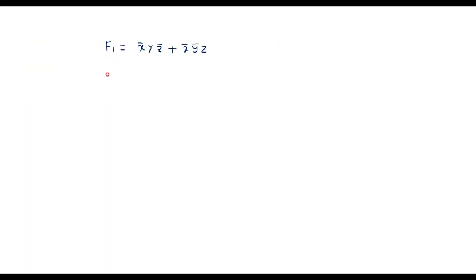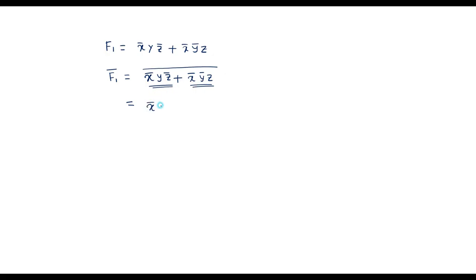Take complement on both sides. So f1 bar is equal to the complement of (x̄yz̄ plus x̄ȳz). Now applying De Morgan's theorem, I will consider the first term and the second term separately. So I can write it as (x̄yz̄) bar dot (x̄ȳz) bar.